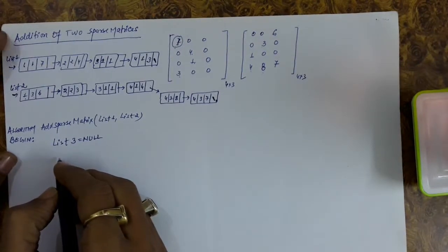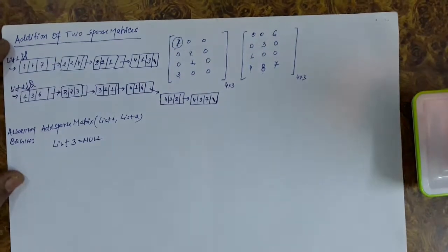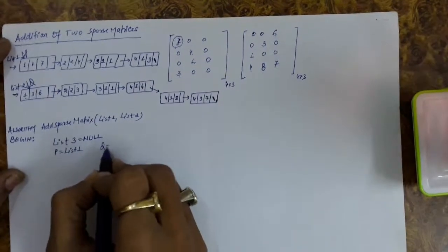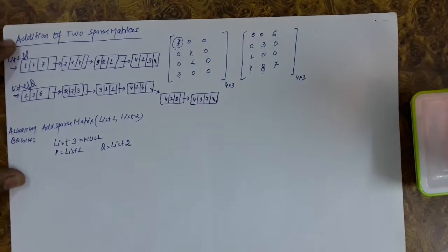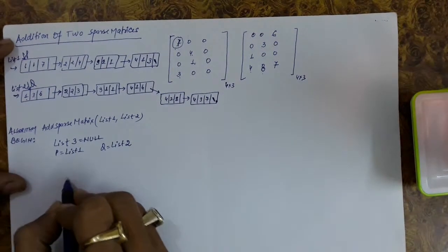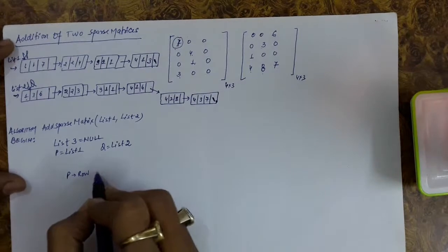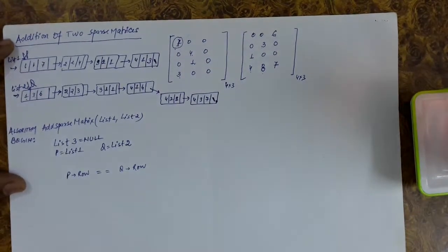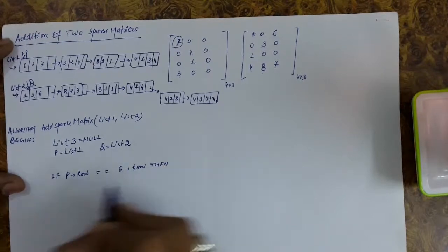Let's take a pointer P for the first list and Q for the second list. We are traversing with the help of P and Q, where P points to list one and Q points to list two. We will be traversing with the help of P and Q. Now, if P dot row is the same as Q dot row, it means the row numbers are equal.